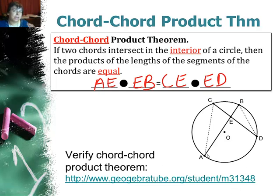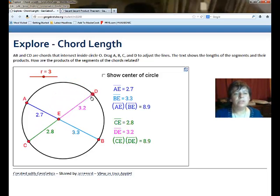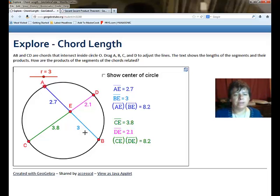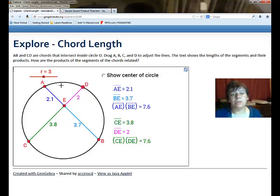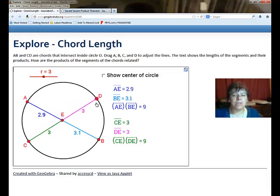We'll look at an interactive circle on GeoGebra where we can play with different chords and see what those products look like. You can adjust the chords and observe the products — here 2.7 times 2.7 and 3 times 3. There is some rounding, but the general idea is that blue times blue gives the same product as green times pink. This product stays the same as that product.